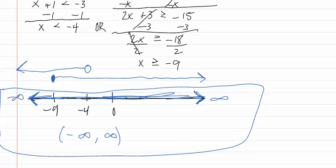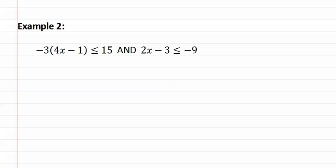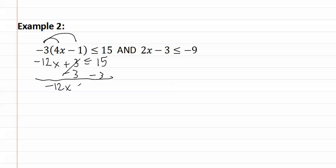Let's look at the second example. It is an 'and' statement. Let's start by distributing, which gives us negative twelve x plus three is less than or equal to fifteen. We continue solving by subtracting three from each side, giving us negative twelve x is less than or equal to twelve. We divide each side by negative twelve, and remember when we divide by a negative we must flip the sign, making it x is greater than or equal to negative one.